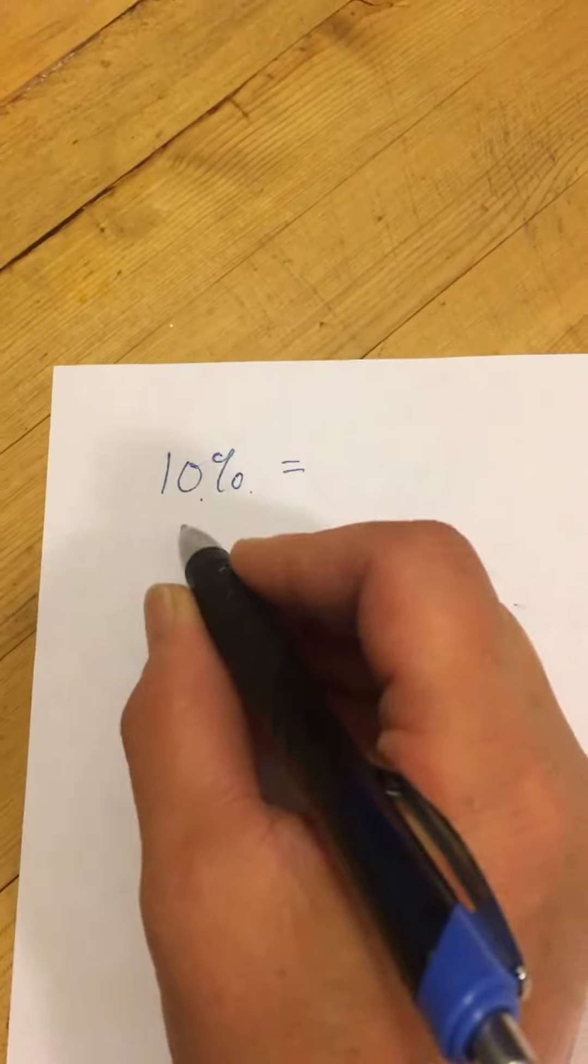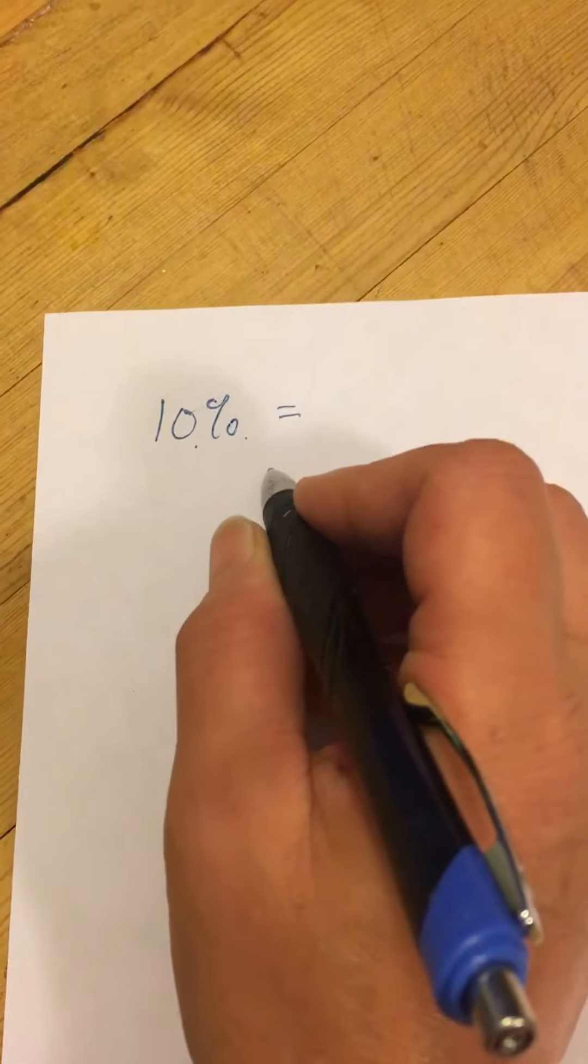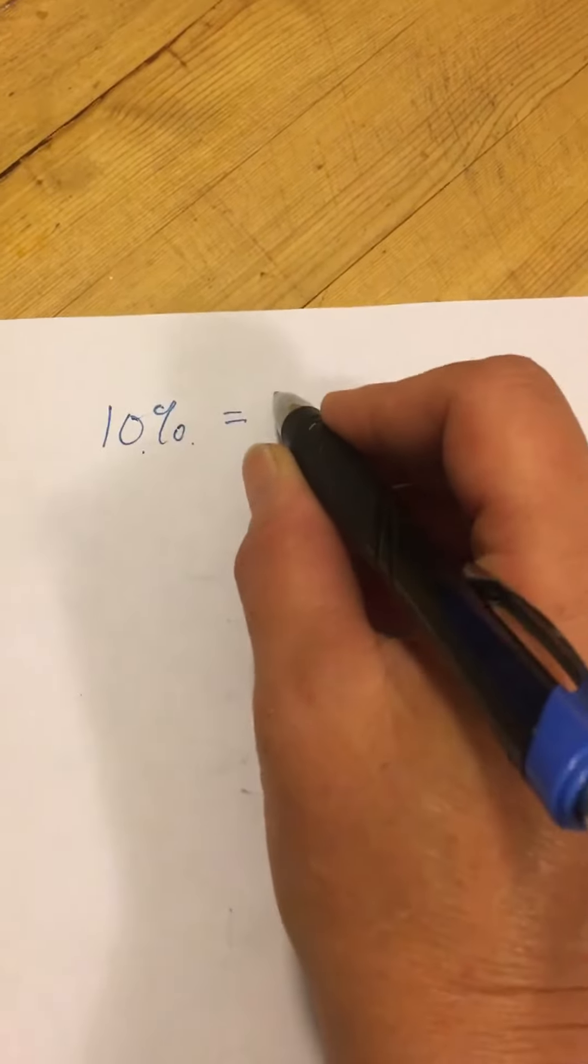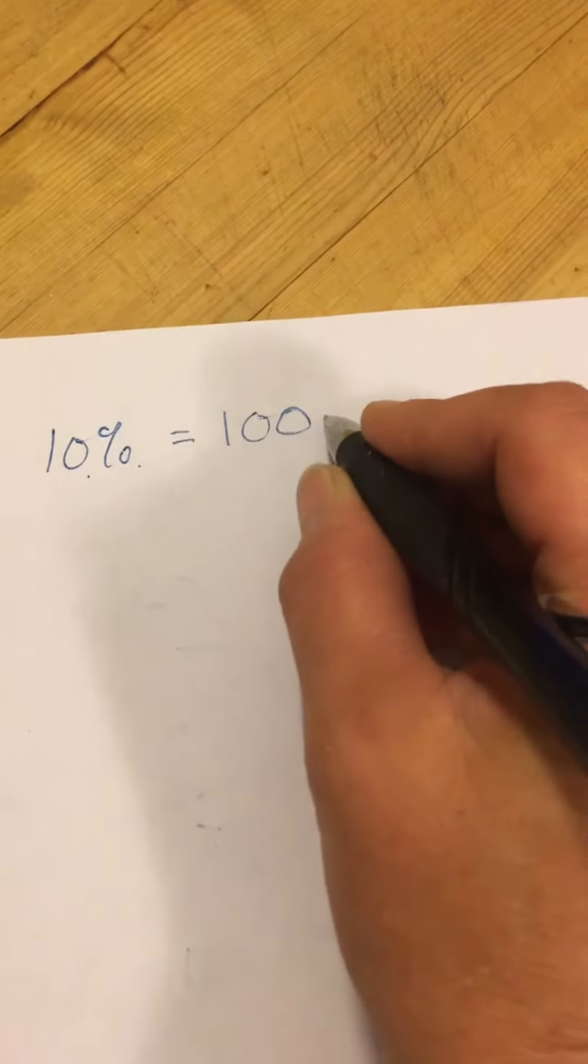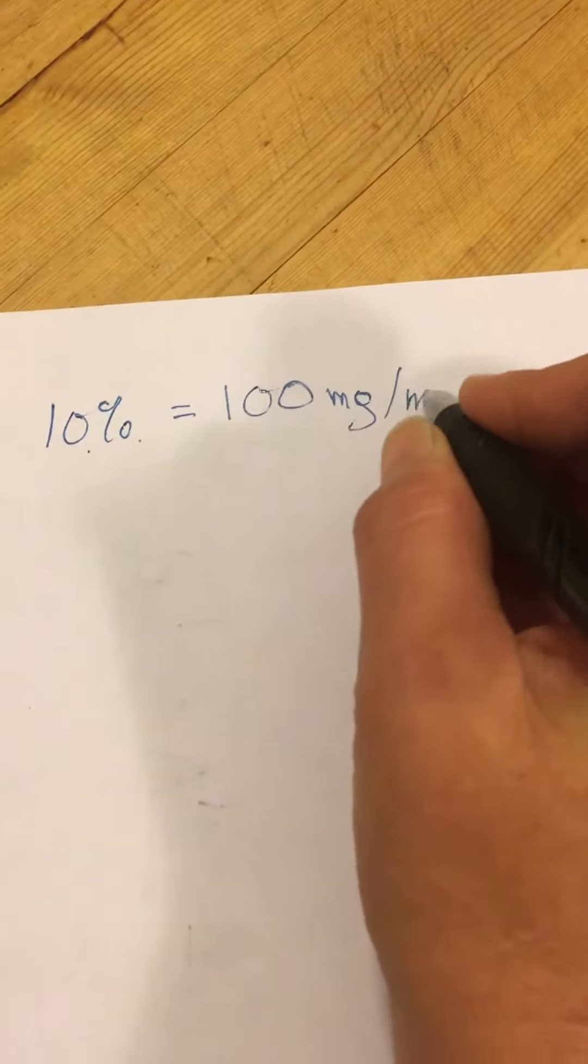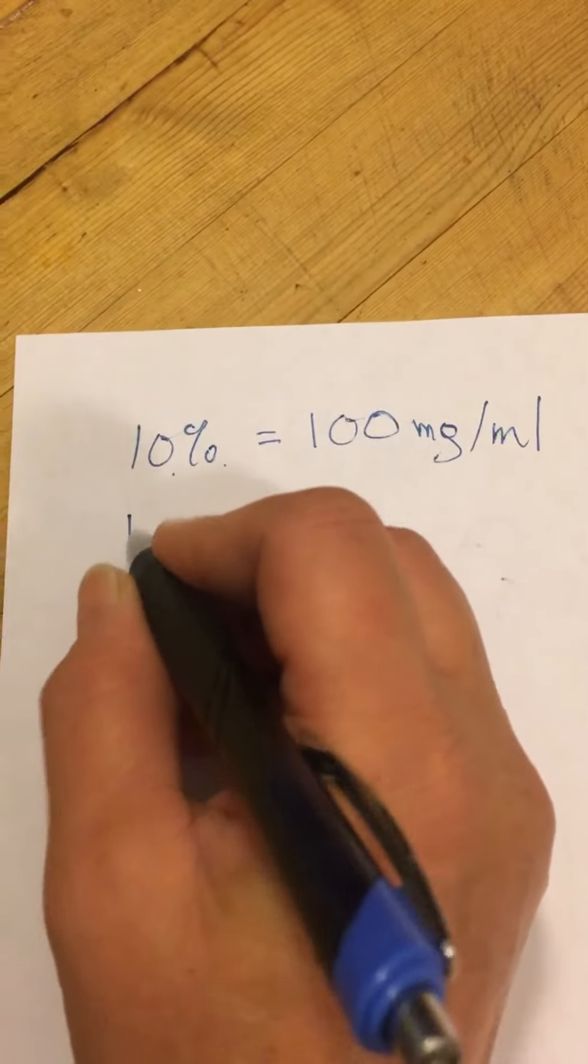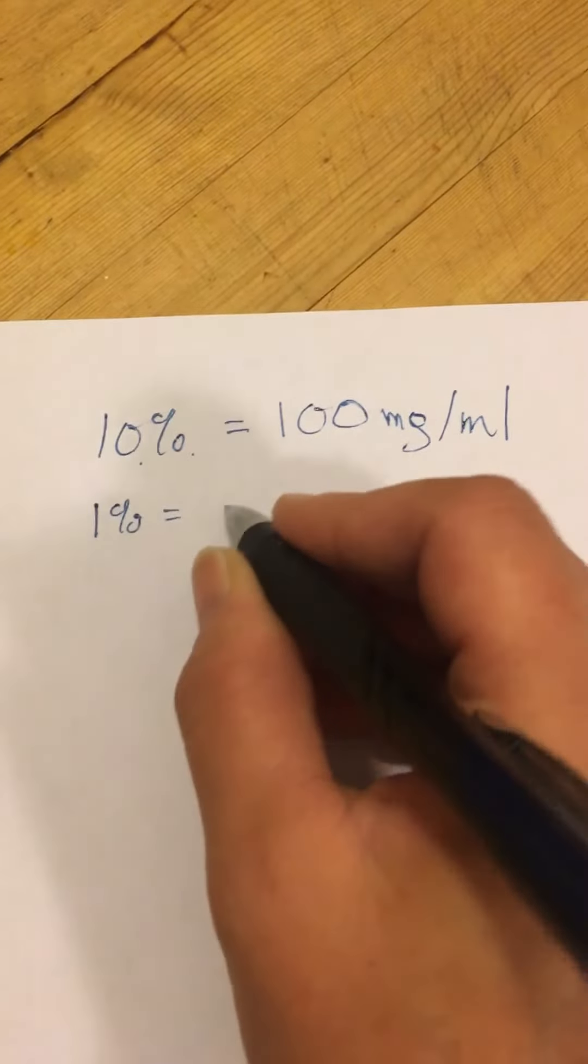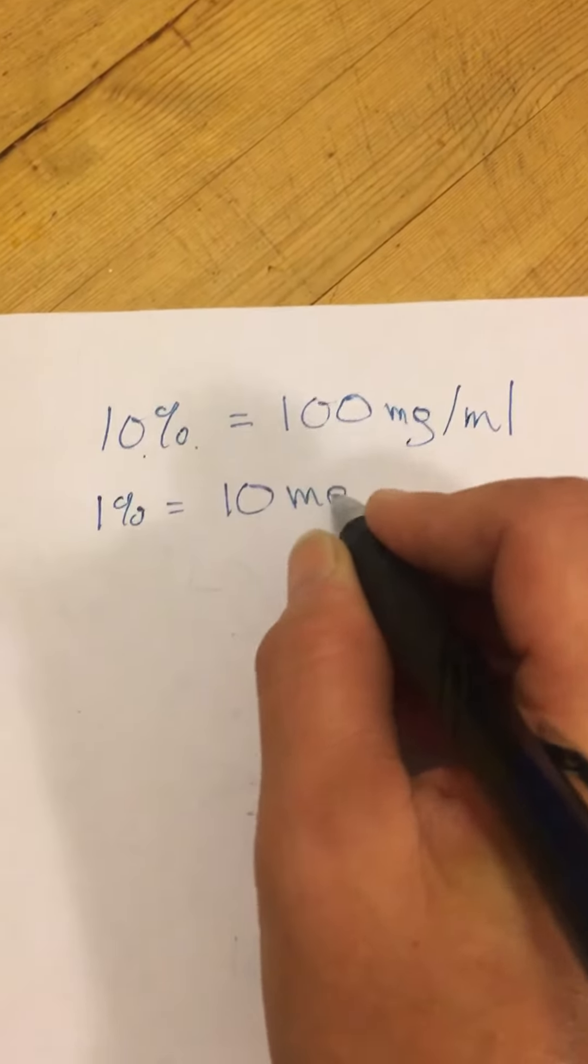So if you have to convert percentage to mg per ml in order to complete a dose calculation, 10% solution is equal to 100 mg per ml. A 1% solution is equal to 10 mg per ml.